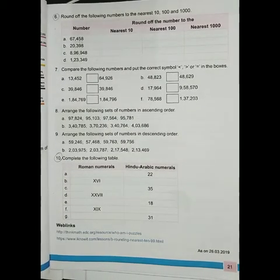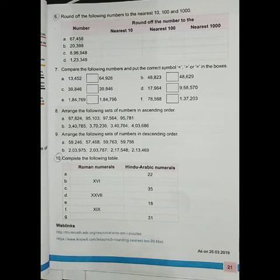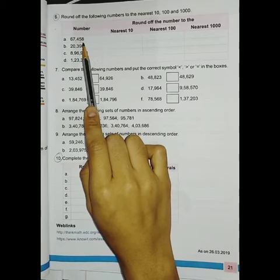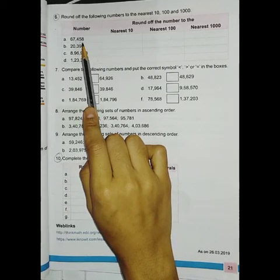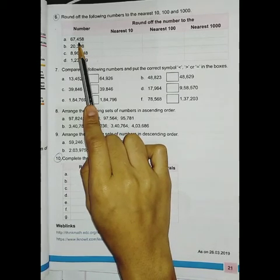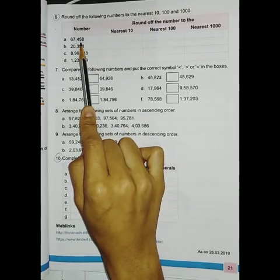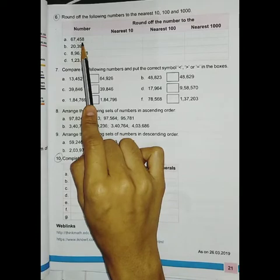For the nearest ten, we need to look at the ones place. If the number in the ones place is five or greater than five, we will look at the tens place, and the tens place will increase by one and the ones place will become zero.